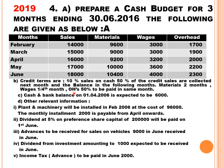For overheads, 50% is paid in the same month and another 50% is paid in the next month. For example, February overheads are Rs. 1,700 — so Rs. 850 is paid in February and Rs. 850 in March. March overheads are Rs. 1,900, so Rs. 950 is paid in March and Rs. 950 in April, and so on.